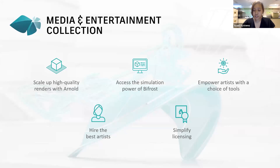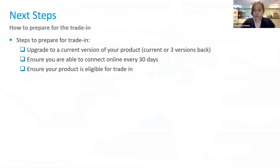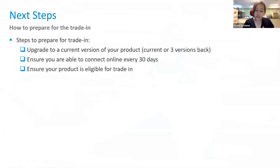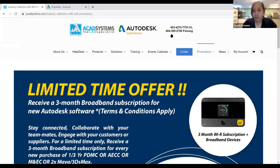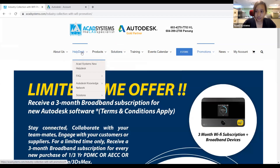So what are the steps to prepare for the transition to Named User? First, make sure you have upgraded to the current versions of your product — preferably the three-year versions from 2021. Second, ensure that you're able to connect online every 30 days to receive learning content and updates — make sure you have access at least once every 30 days for a smooth running program. Third, ensure your product is eligible for the transition. To check eligibility, you can contact us. We have contact numbers for KL and Penang, and there's also a Help Desk on our website where you can submit a ticket without needing an account.